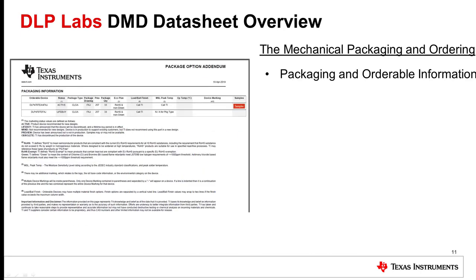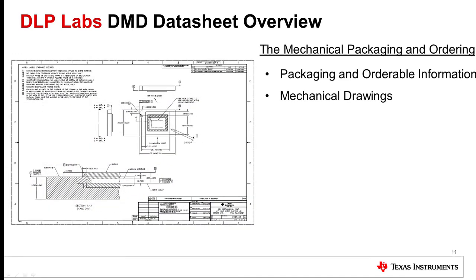The final portion of the datasheet is section 12, which describes the mechanical, packaging, and orderable information for the DMD. The package option addendum shows the orderable part number from TI, along with its status — active or otherwise. Also provided in this section are the mechanical drawings of the DMD necessary to create a PCB to interface to the device.